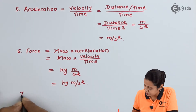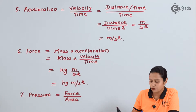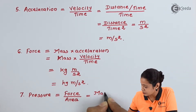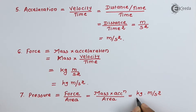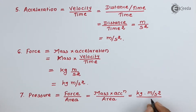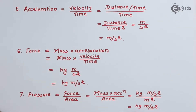The next quantity we will take is pressure. We know pressure is equal to force upon area, where force equals mass into acceleration. The unit of mass is kg, acceleration is meter per second square, and area is meter square. One meter cancels, giving kg meter per second square per meter square, which simplifies to kg per meter per second square. In SI, force can be expressed as Newton, so another unit of pressure is Newton per meter square.